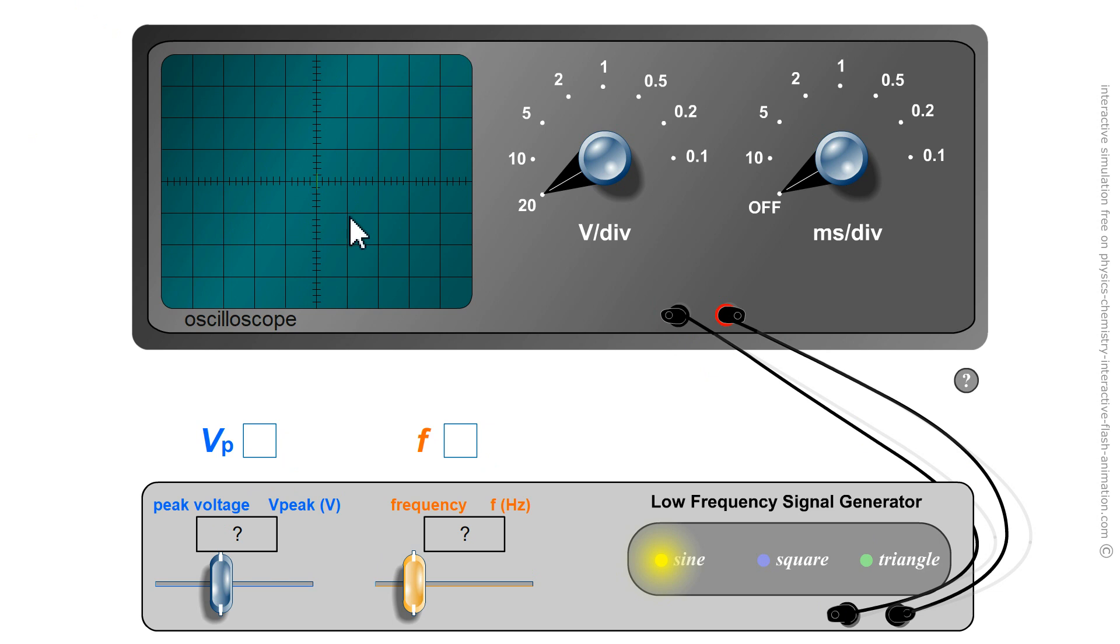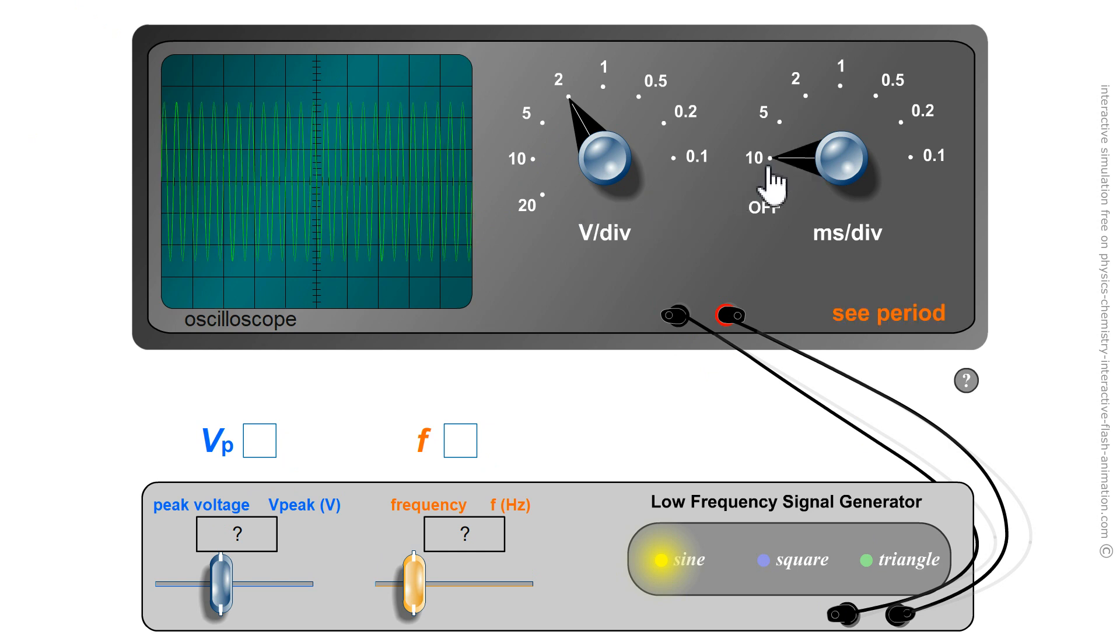So let's start with the amplitude. V-peak. Here I can measure it without even using the sweep. Except that I am not yet sure that it is an alternating voltage. Yes.